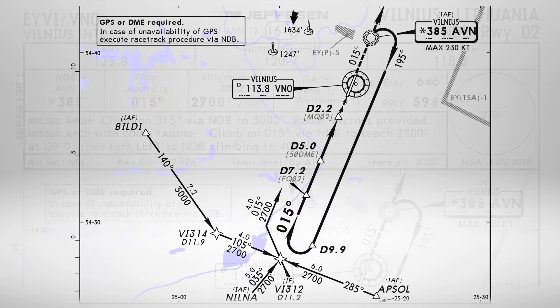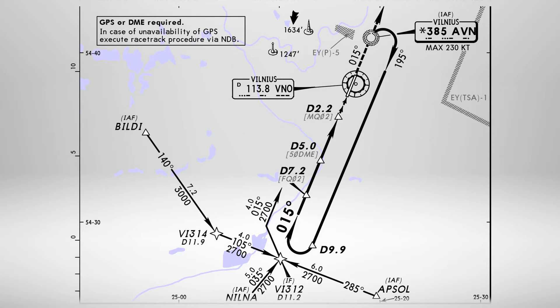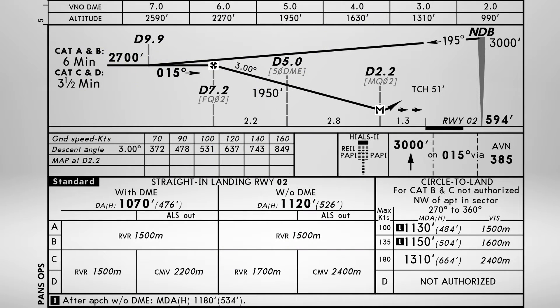Here is our approach scheme. After the beacon we will turn right to heading 105 until 9.9 miles from Victor November Oscar, Vilnius VOR, and then back on final course 095 until 7.2 miles from Victor November Oscar. We will stop descent following the altitude table and keeping our vertical speed from the chart. Our minimums for today will be 1,070 feet, and for category A, the minimum runway visual range will be 1,500 meters.